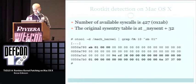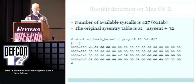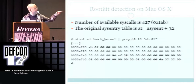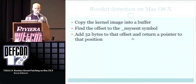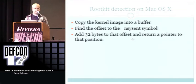The number of system calls available is 427, which is 0x1AB in hex. The original sysentry table is at nsysent plus 32. So we look at the Mach kernel image and find the nsysent symbol; 32 bytes ahead is the start of the sysentry table. All we need to do is copy the kernel image into a buffer, find the offset to the nsysent symbol, add 32 bytes, and return a pointer to that position — giving us the sysentry table from disk as a known state. An attacker could hook the open call to the kernel image to make you read a fake table, but it's simple and it works.